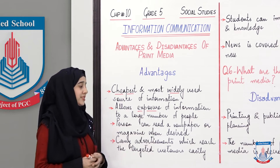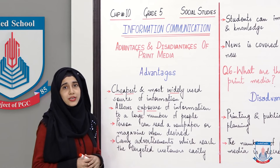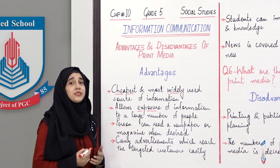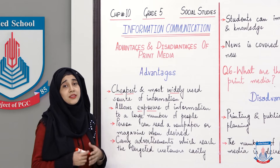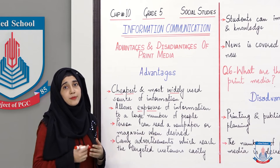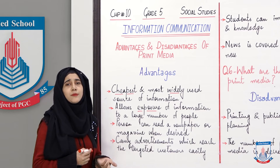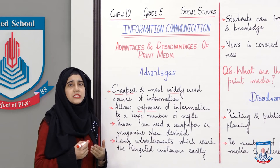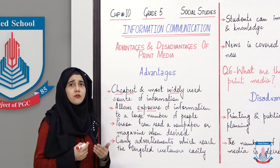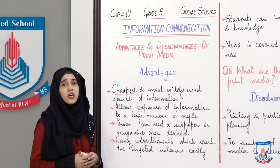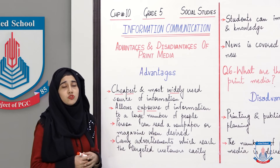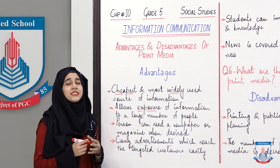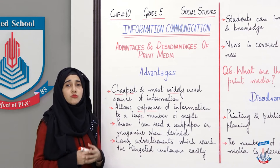A person can read a newspaper or magazine when desired. TV shows have a specific time, and if you miss them, it becomes difficult to watch again — internet availability is also needed. But a newspaper or magazine can be read whenever you want. If you read an article and want to read it again, you can, because the newspaper is still with you, unlike a live TV or mobile show.